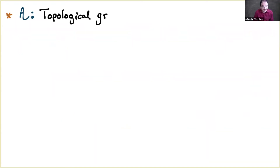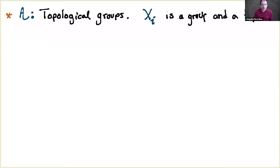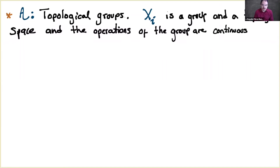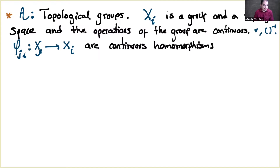Now, what if we consider not only the category of topological spaces but the category of topological groups? Here X_i is a group together with a topology such that the group operations — mainly multiplication and the inverse — are continuous. In this case, the transition morphisms are continuous homomorphisms, and the canonical morphisms to every X_i are also continuous homomorphisms, since these are the morphisms in the category of topological groups.